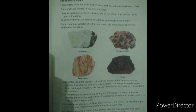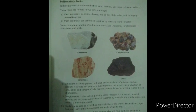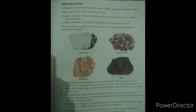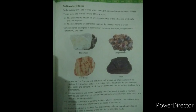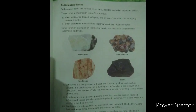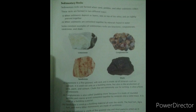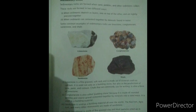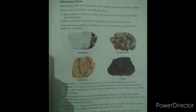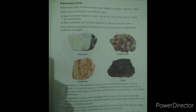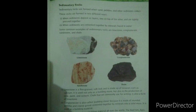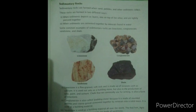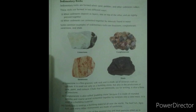Conglomerate is also called pudding stone because it is made of rounded pebbles and coarse gravel cemented together by minerals into a solid mass.